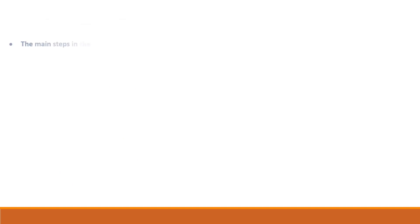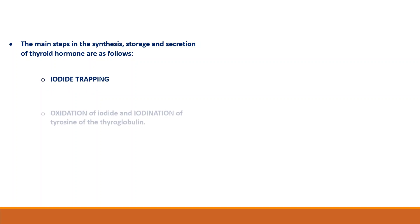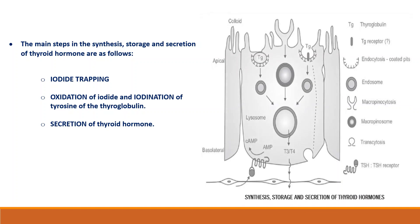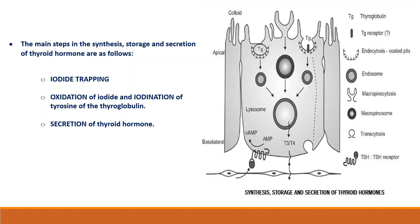The main steps in the synthesis, storage and secretion of thyroid hormones are: iodide trapping, oxidation of iodide and iodination of tyrosine of the thyroglobulin, and secretion of thyroid hormone. Iodide trapping is the active transport of iodide ions into follicular cells of the thyroid gland by a basement membrane protein called sodium-iodide symporter. In the follicular cells, the iodide ion is oxidized to iodine by the peroxidase enzyme. This iodine combines with tyrosine residues of the thyroglobulin molecule to form monoiodothyrosine and diiodothyrosine.